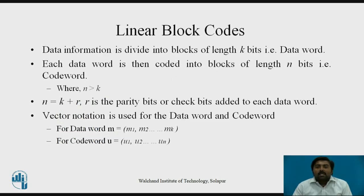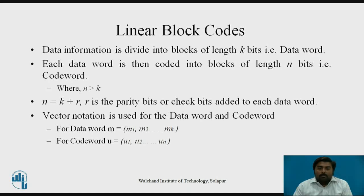Linear block codes mean that data information is divided into different blocks of length k bits. We transmit the data in different blocks of size k bits, called data words. Each data word is then encoded into a block of length n bits, called a code word. Here n is always greater than k, so n equals k plus r, where r is the additional extra bits — also called redundancy bits or parity bits — added to your data word.